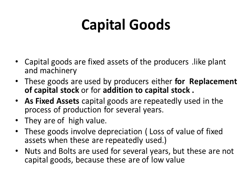Students, don't confuse on this concept. Fixed assets — capital goods — are repeatedly used in the process of production for several years. Earlier we discussed durable goods; those were durable consumer goods. Now we are discussing capital goods.